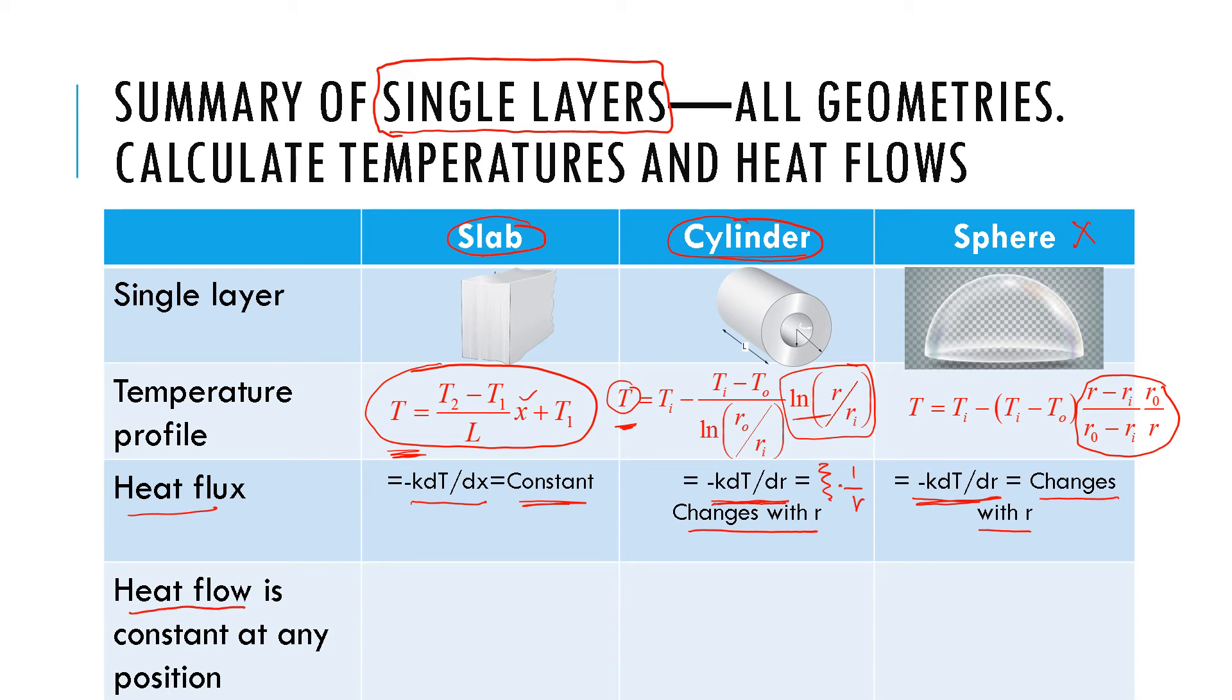Heat flow, on the other hand, flow is over the entire area. So in this case it's minus k dT/dx times the area. Since the area is constant at any point, then flow is going to be a constant.